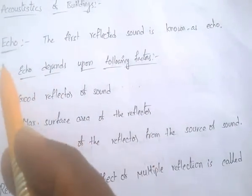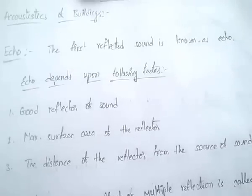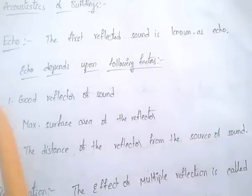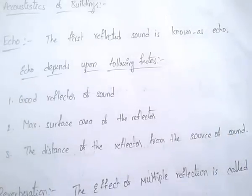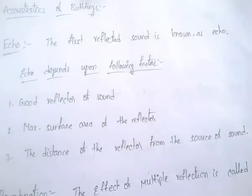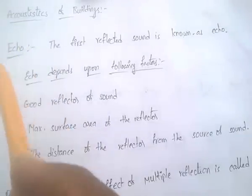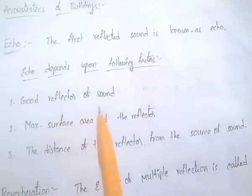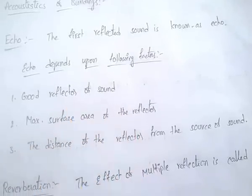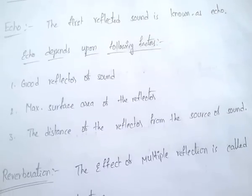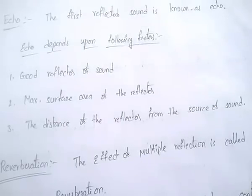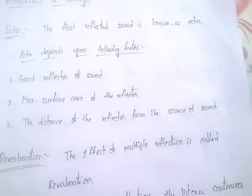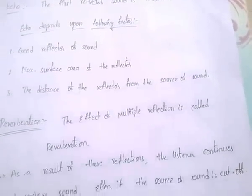In acoustics, the first term is echo. Echo is the first reflected sound. Echo depends upon the following factors: a good reflector of sound, the maximum surface area of the reflector, and the distance of the reflector from the source of sound.